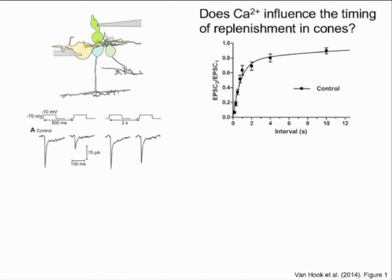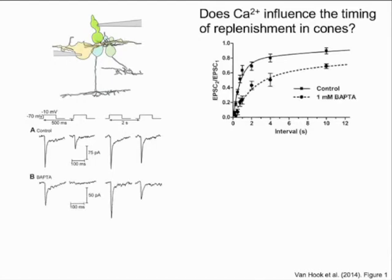We used two approaches to explore the way that calcium influences this process. In the first, we included the fast calcium chelator BAPTA in the cone patch pipette. This reduces the spread of calcium from the channels in the terminal, preventing big increases in average calcium concentration. When we did this, the recovery from synaptic depression was slowed, and fitting the data indicated that the major effect of BAPTA was to reduce the amplitude of the fast recovery process.